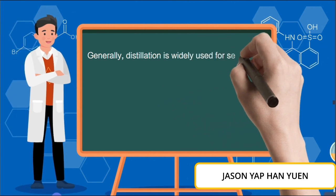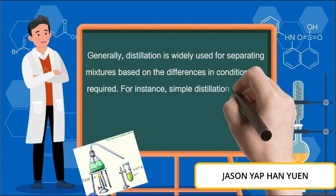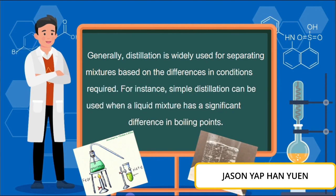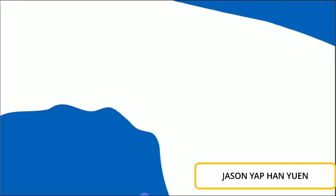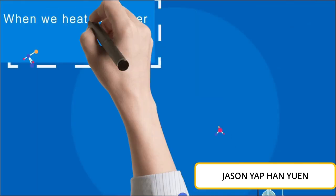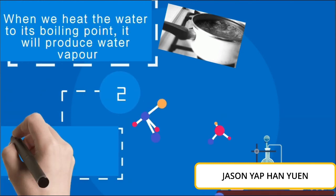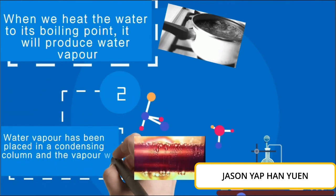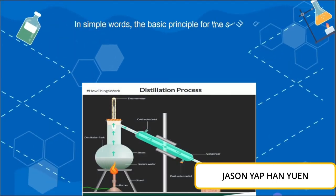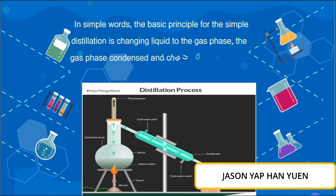Generally, distillation is widely used for separating mixtures based on the difference in conditions required. For instance, simple distillation can be used when the liquid mixture has a significant difference in boiling point. When we heat the water to its boiling point, it will produce water vapor. The water vapor is then passed into the condensing column, where the vapor will flow and form water again. In simple words, the basic principle of simple distillation is changing liquid to the gas phase, and then the gas phase condenses and changes back to liquid again.